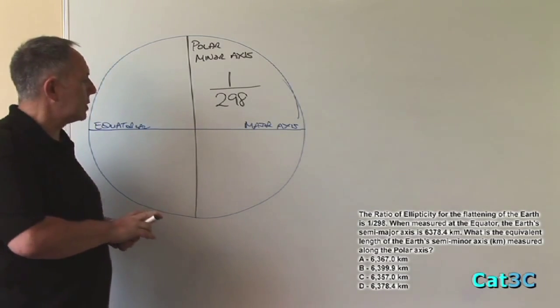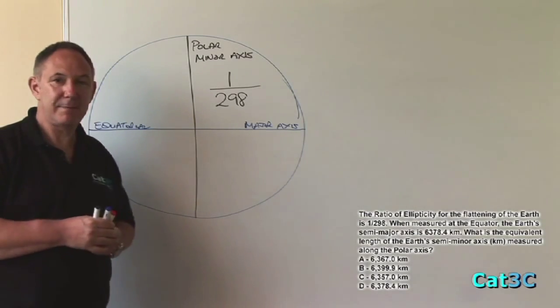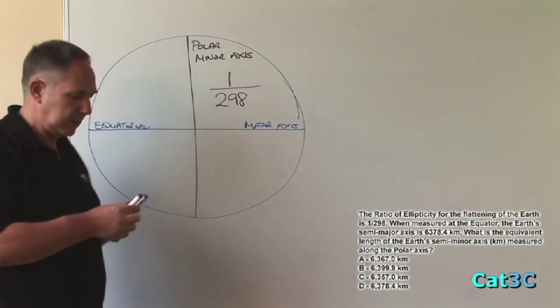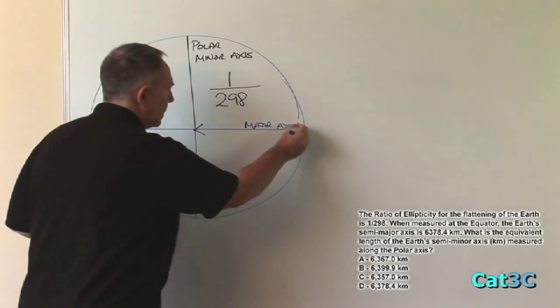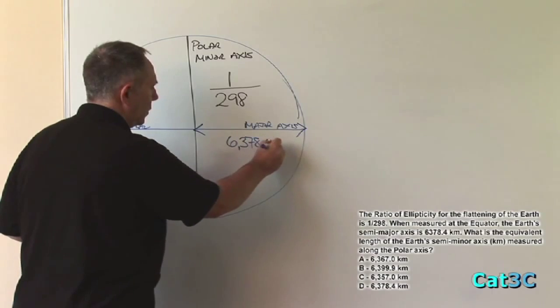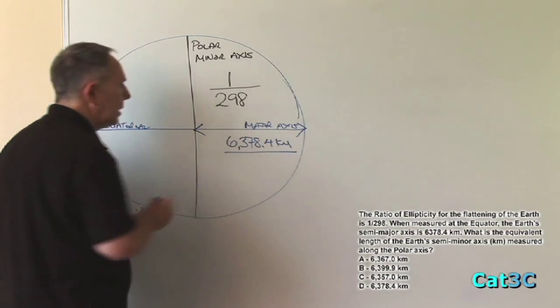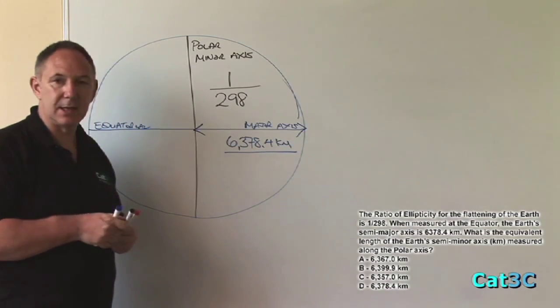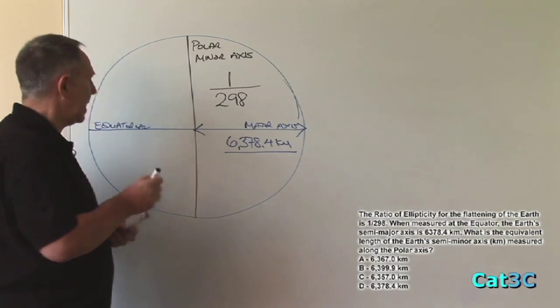Now, what the examiner has told us is that the semi-major axis, or half of the major axis, is 6,378.4 kilometres. And he has asked us to calculate the value of the semi-minor axis, again, half of the minor axis.